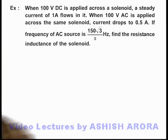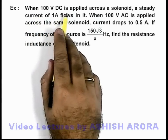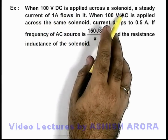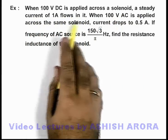In this example we are given that when 100 volt DC is applied across a solenoid, a steady current of 1 ampere flows in it.